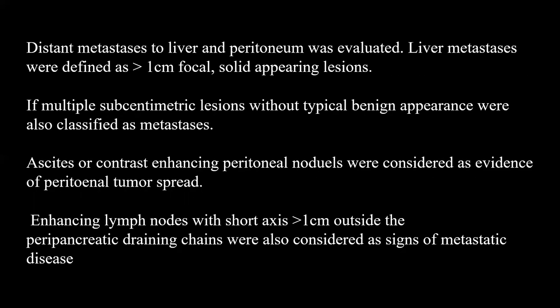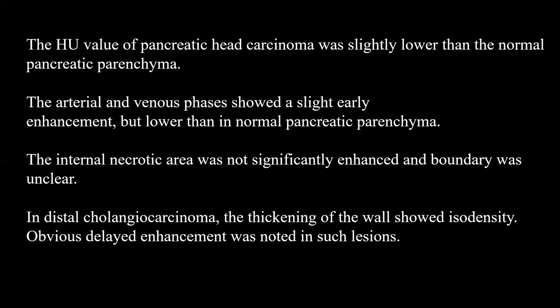Distant metastasis to liver and peritoneum was evaluated. Liver metastases were defined as more than one centimetre focal solid lesions; multiple sub-centimetric lesions without typical benign appearance were also classified as metastasis. Ascites or contrast-enhancing peritoneal nodules were considered evidence of peritoneal tumour spread. Enhancing lymph nodes with short axis exceeding one centimetre outside the peripancreatic draining chains were considered signs of metastatic disease.